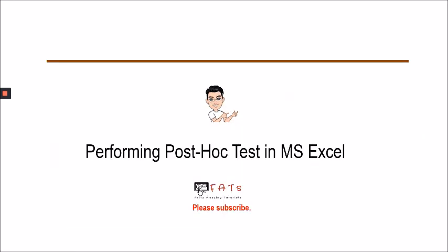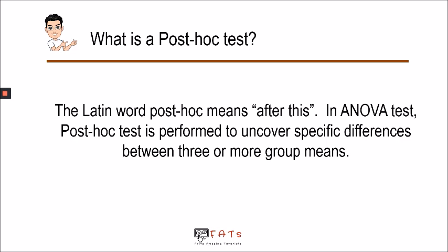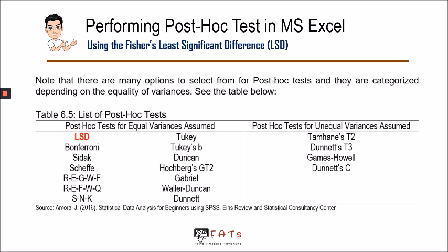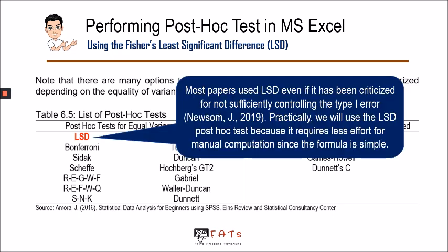Let's proceed to the highlight of this video: performing the post hoc test in Microsoft Excel. First, what is a post hoc test? The Latin phrase 'post hoc' means 'after this.' In the ANOVA test, the post hoc test is performed to uncover the specific differences between three or more groups. We only perform the post hoc test once we identify in the ANOVA test that there is a significant difference among the three or more independent groups. In this demonstration, we will be using Fisher's Least Significant Difference.